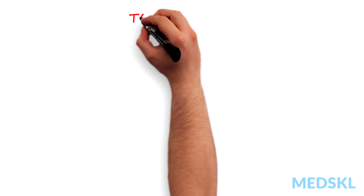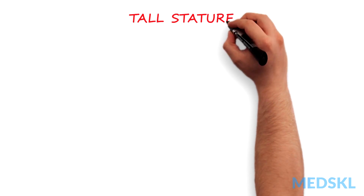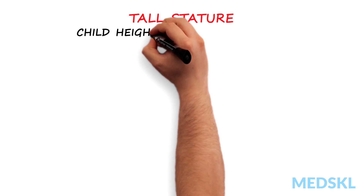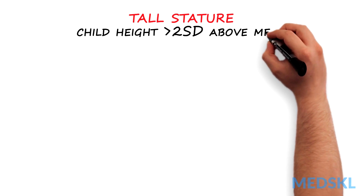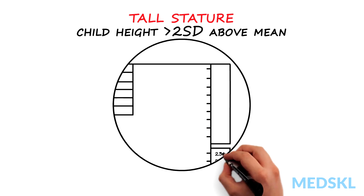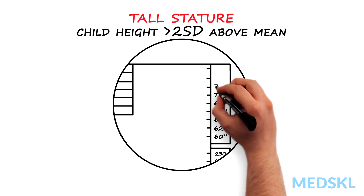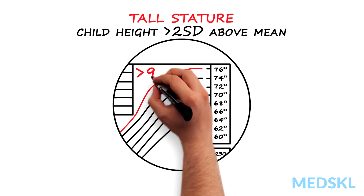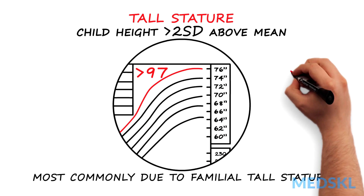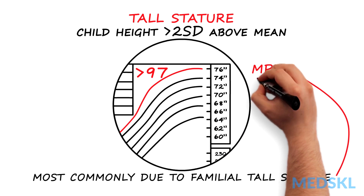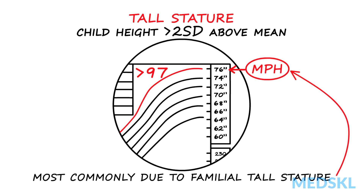Tall stature is defined as height greater than two standard deviations above the mean. Most commonly, this is due to familial tall stature, and the growth curve should be concordant with the mid-parental height.